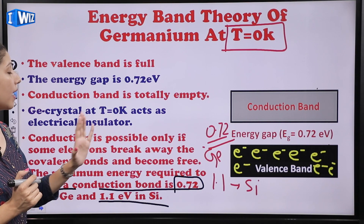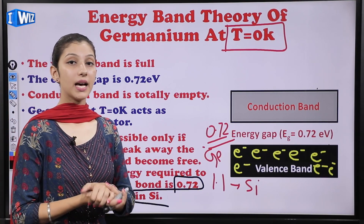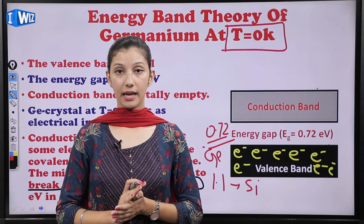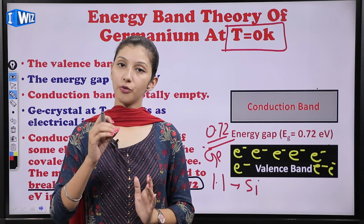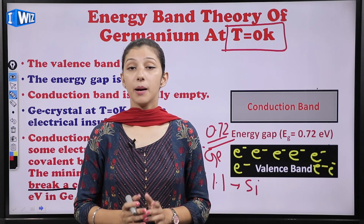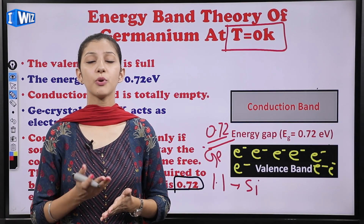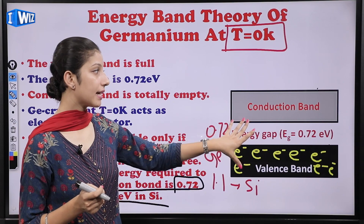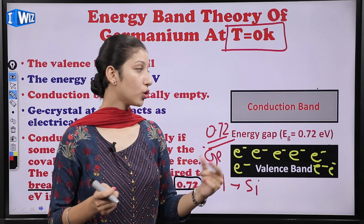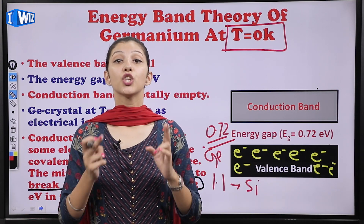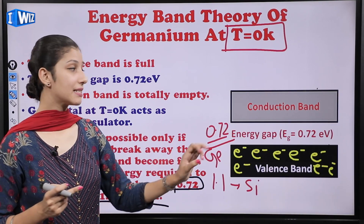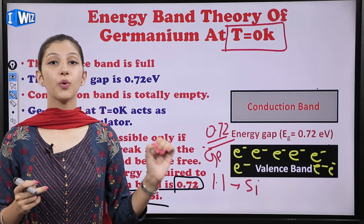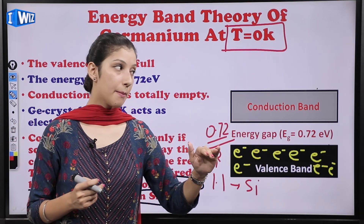Germanium crystal at T = 0 K acts as an electrical insulator. At T = 0 Kelvin, all electrons are in the valence band and no energy is provided, so conduction band has no electrons. To shift from valence band to conduction band, germanium electrons need at least 0.72 electron volts, and silicon electrons need minimum 1.1 electron volts.